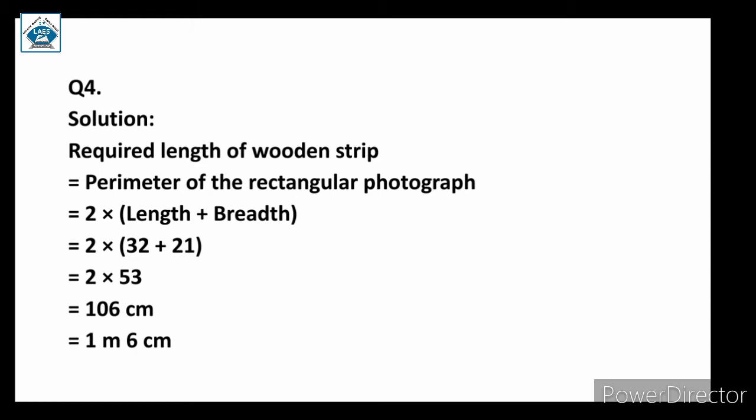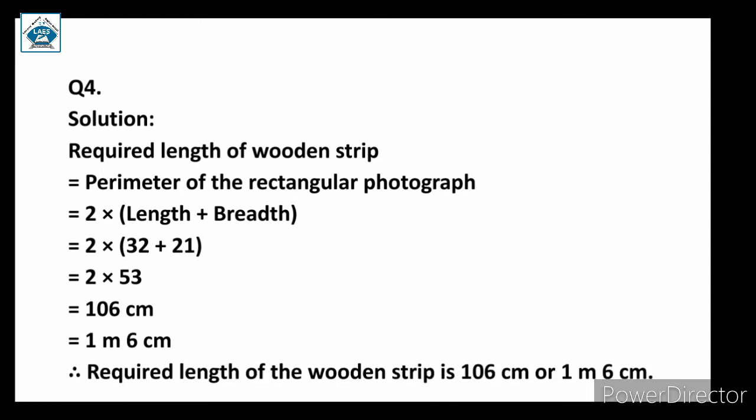Converting 106 centimeter, we write it as 100 plus 6 centimeter. 100 centimeter equals one meter, and 6 centimeter remains as it is. Therefore the required length of the wooden strip is 106 centimeter, or equivalently one meter and six centimeter.